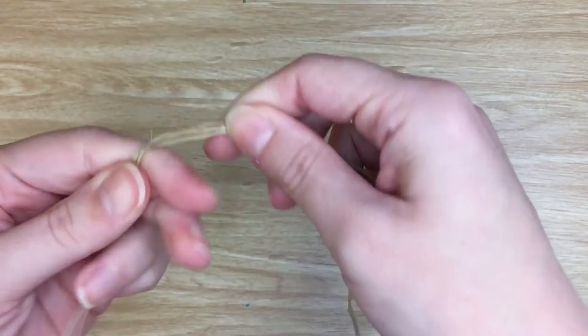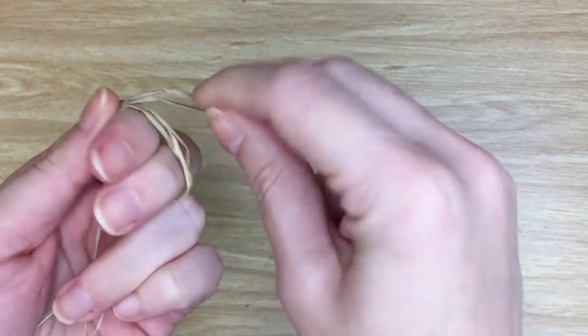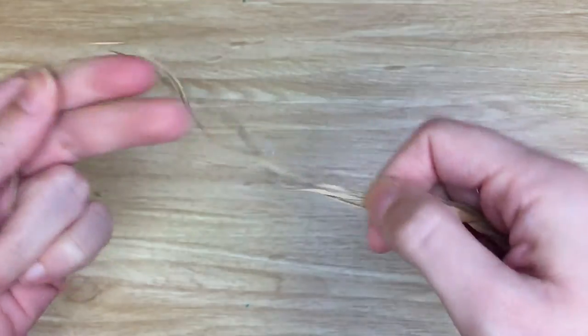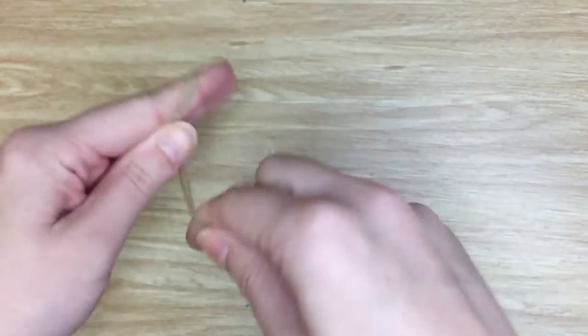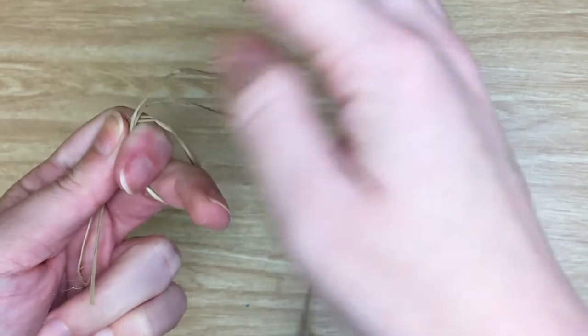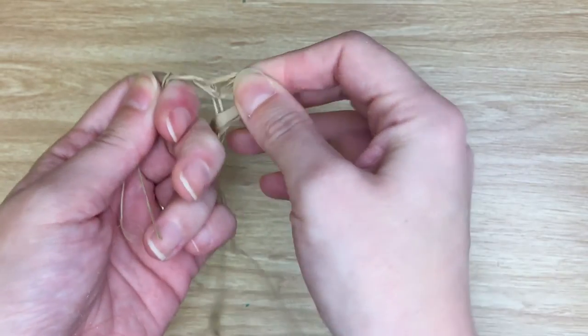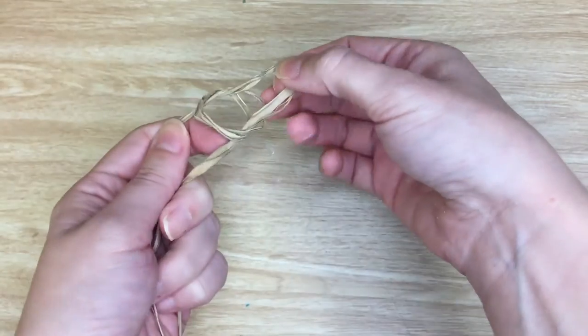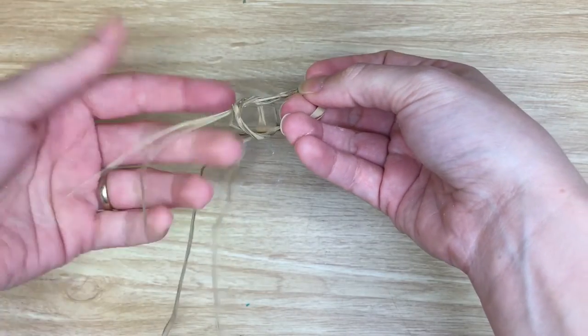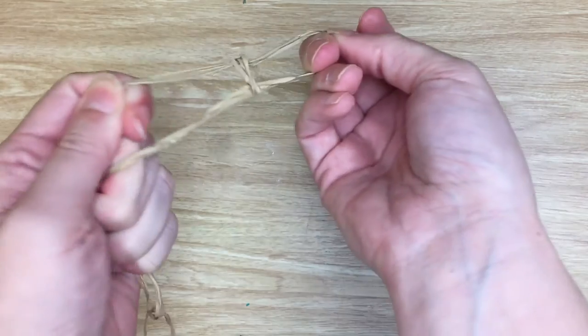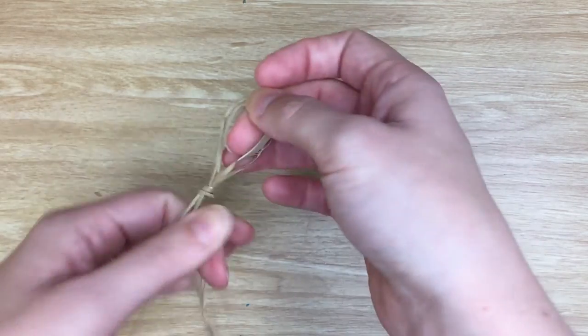You're going to take both ends and create a simple loop. Take it, wrap it around two fingers and push it through, just like this. Pull a loop and then take the shorter bit and just pull, just like that.